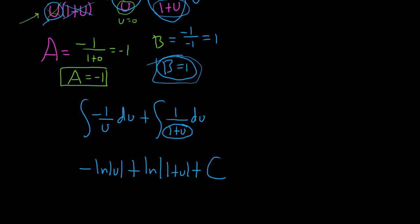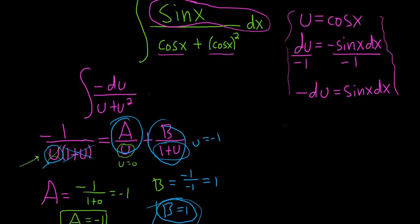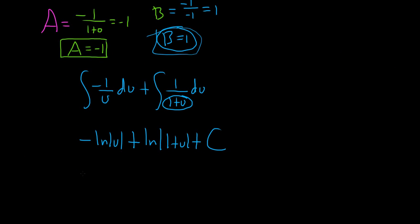And normally, this would be the final answer, but it's not. Oh, no, no. Not in this problem. We did some funky stuff at the beginning. There it is. U equals cosine x, the cosine function. So this is negative ln, absolute value, cosine of x plus ln, absolute value, 1 plus cosine of x plus c. And that should be the final answer to this awesome problem.